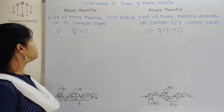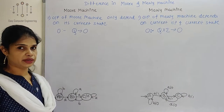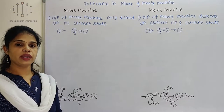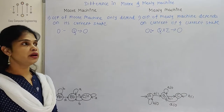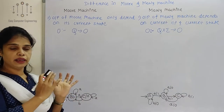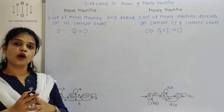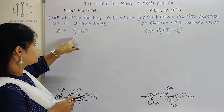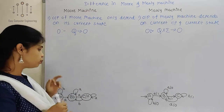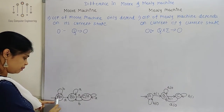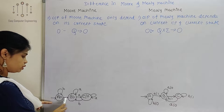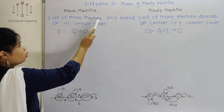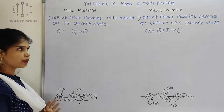Output of Moore machine only depends on its current state. In Moore machine and Mealy machine there are 7-tuples. Sigma is having a delta function, input symbols, and output symbols. That output function O gives Q mapping to O, meaning output belongs to states. In this example, state A has output 0, B has output 1, C has output 0. So Moore machine output only depends on its current state.